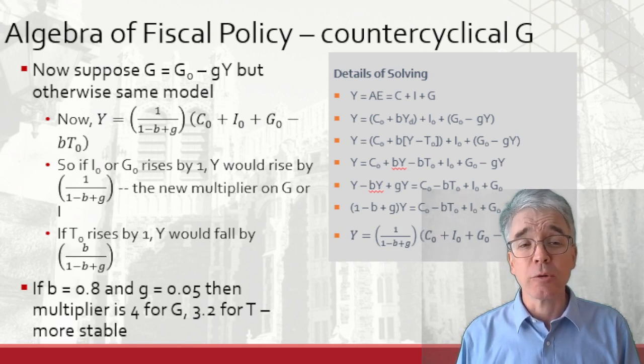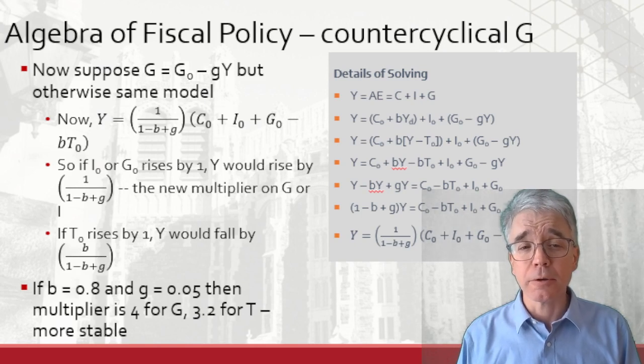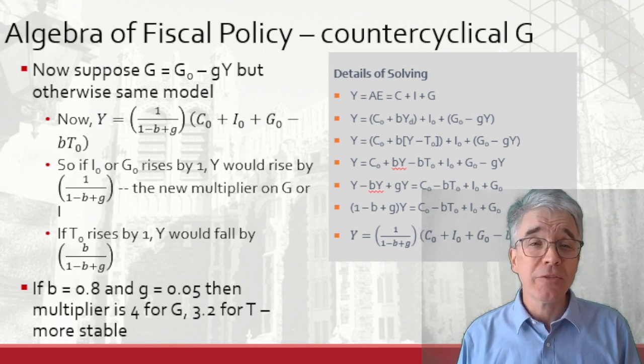A term with little g is going to make the multiplier smaller. If B were 80% and G were 5%, then the multiplier goes down from 5 to 4. That makes the economy more stable.